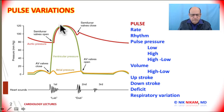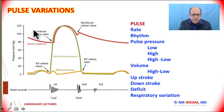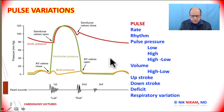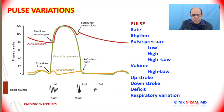Pulse pressure is the difference between the peak systolic pressure and the diastolic pressure of the arterial pulse. If the systolic pressure is 120 and the diastolic pressure is 80 mmHg, then the pulse pressure is 40 mmHg. The normal pulse pressure is between 30 to 60 mmHg. Pulse pressure reflects the amount of blood pumped with each heartbeat and gives information about rate, rhythm, volume, and more.